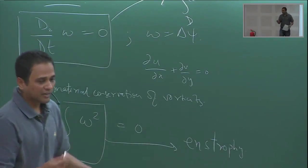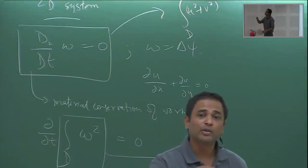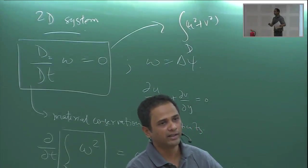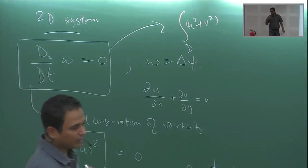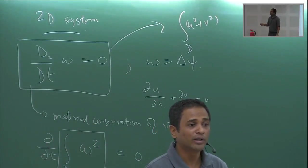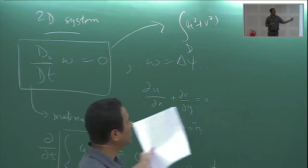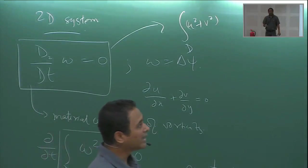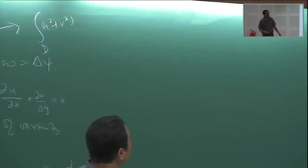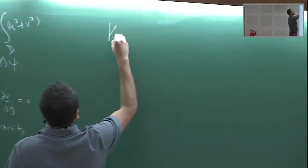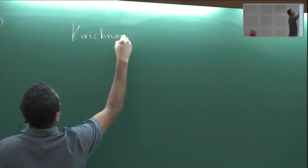Given these dual constraints, you get a distinctly different character to two-dimensional turbulence compared to 3D. This was investigated beginning from the 1950s — there are famous physicists associated with 2D turbulence like T.D. Lee — but the most concrete picture came out in the 1960s from the work of Kraichnan.